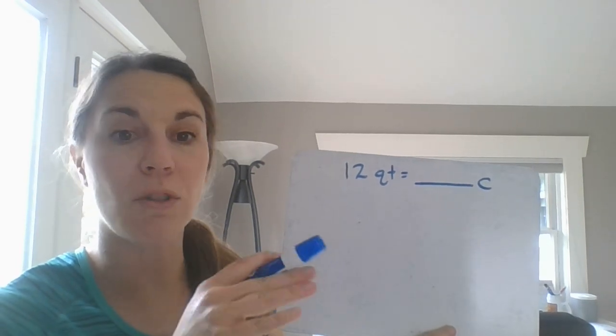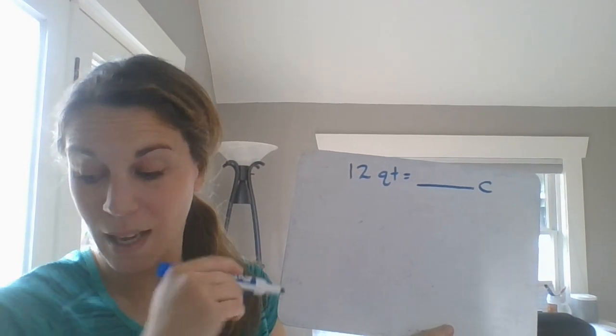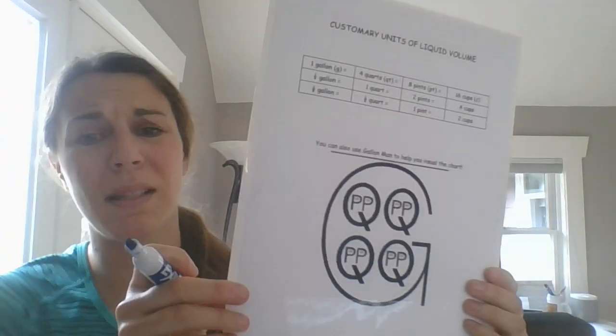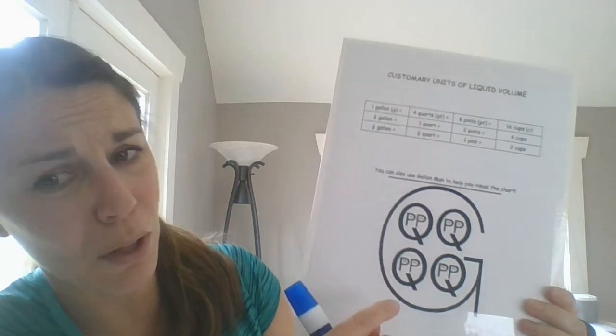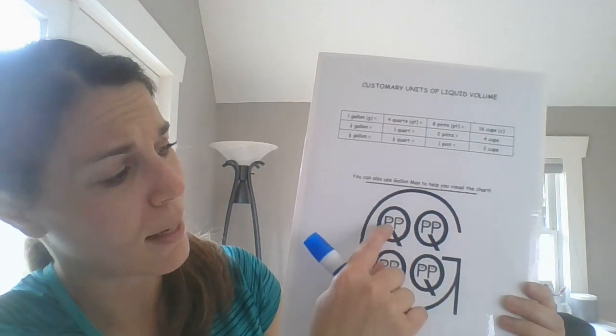So if I'm just coding and we just went over these, so if I'm going quarts to cups, and again, you can look at this visual. I'm going to put this down for one second. I think gallon man is a beautiful visual, you guys, even to see. So if I'm looking at this and I was going quarts to cups, look at how tiny cups are, right? They're a lot smaller.